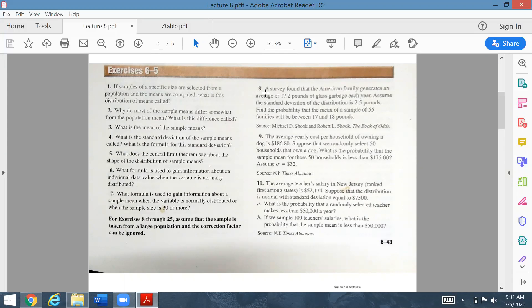Question number eight: A survey found that the American family generates an average of 17.2 pounds of glass garbage each year. Assume that the standard deviation of the distribution is 2.5 pounds. The sigma value is 2.5. This 17.2 is the average of the population, denoted by mu.